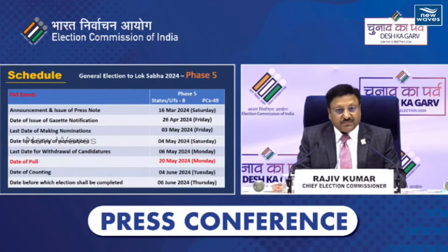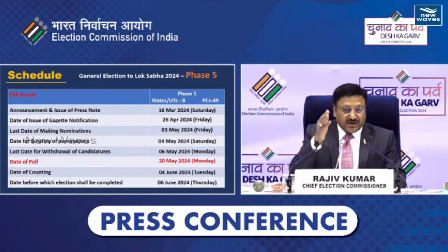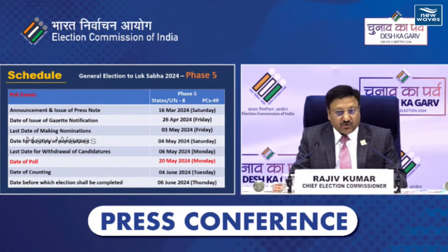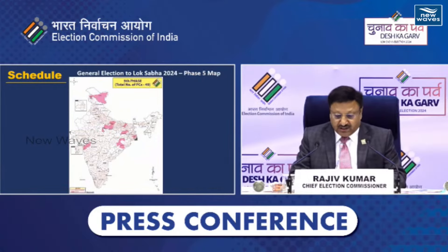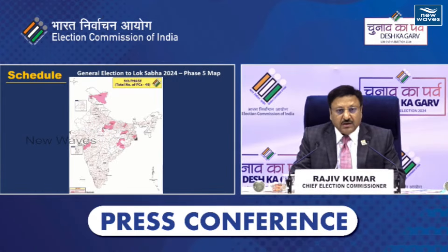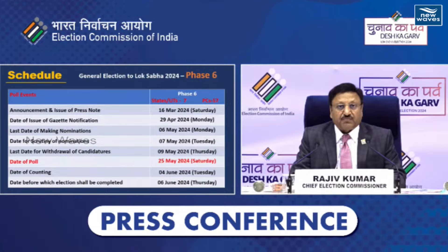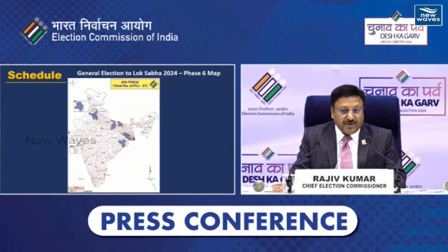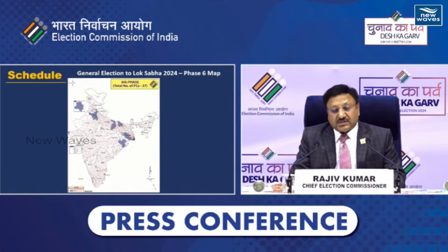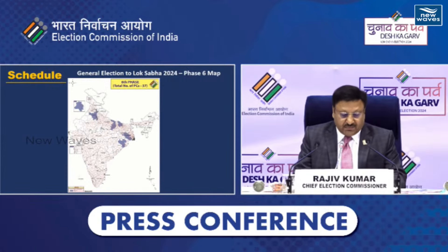Phase 5 26th April se shuru hogi aur 20th May ko date of poll hogi — bech mein nomination, scrutiny aur withdrawal ki dates rahengi, counting 4th June ko hai. Phase 5 mein 49 constituencies will go to the poll. Phase 6 mein 57 constituencies will go to the poll, starting from Gazette notification on 29th April and finishing on 25th May 2024. Is phase ka map mostly UP, Bihar, Bengal, Odisha aur saath mein kuch North ka portion cover karega.